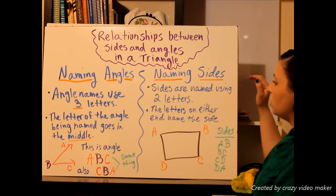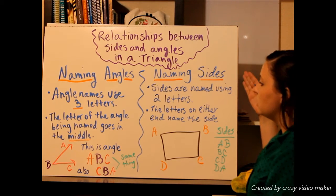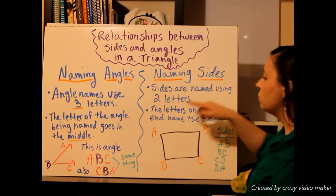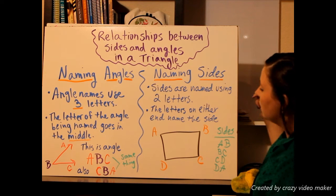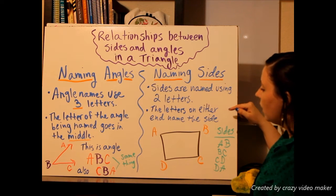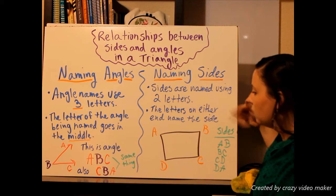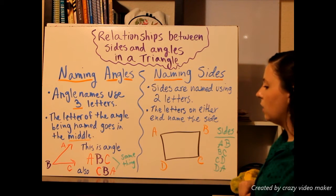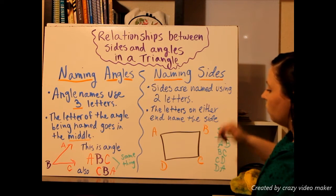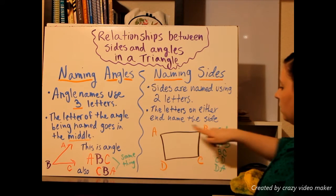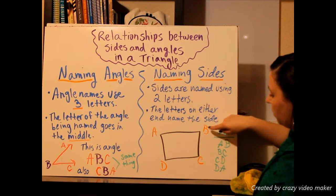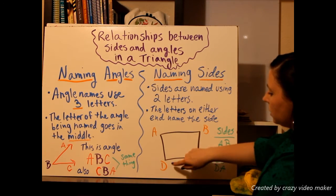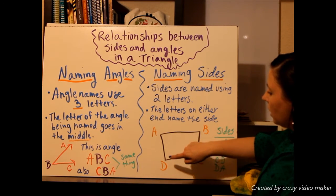Now we'll go over to the naming of sides. To name a side of a figure, you're going to use two letters. The letters on either end of the side give the name. So here we have a little rectangle. We have sides AB, BC, CD, and DA.